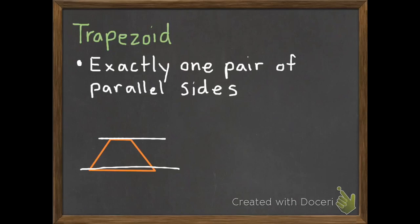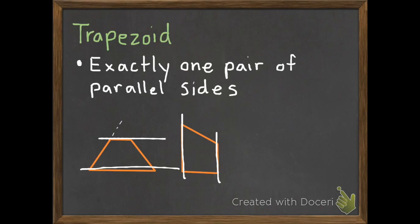Here's another example of a trapezoid. It has exactly one pair of parallel lines — this one and this one. The other lines are not parallel; if we kept these lines going, they would eventually cross. So that is a trapezoid.